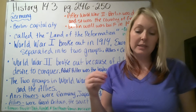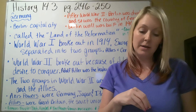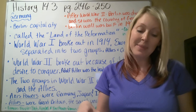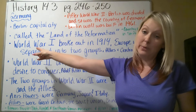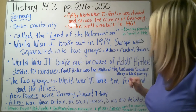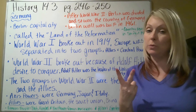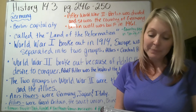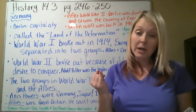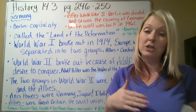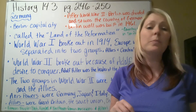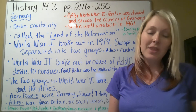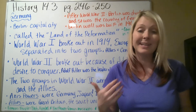Because of the humanist ideas of the Enlightenment and the French Revolution, Europe became really tense. Eventually, World War One broke out in 1914. Europe was separated into two groups: the Allies and the Central Powers. The Allies were made up of Great Britain, Russia, France, Japan, and eventually the United States. The Central Powers were Germany and some of its partners.